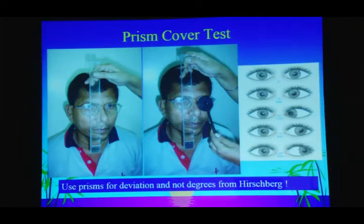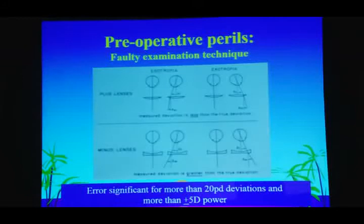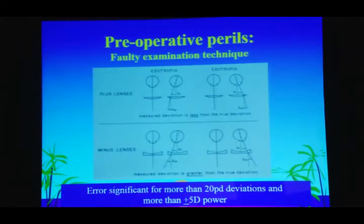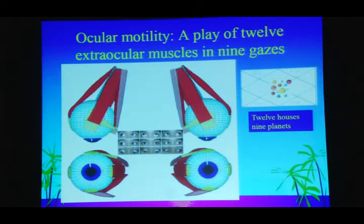We need to remember to use prisms and not Hirschbergs for planning surgery. Prisms when used should not be stacked one over the other. When children have refractive glasses and we measure through them, there will be induced errors because of the prismatic effect, which is significant when spherical correction is more than five diopters. We have twelve extraocular muscles interfering in nine gazes — just like astrology where nine planets create mischief in twelve houses.